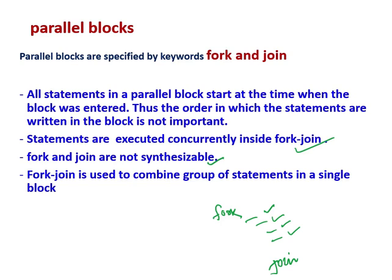Whatever is written inside a fork and join is called a parallel block. Everything inside fork and join is evaluated and executed independently or concurrently. So the order in which the statements are written does not matter, because they all run independently, in parallel, and concurrently. Fork and join is used to combine a group of statements into a single block.